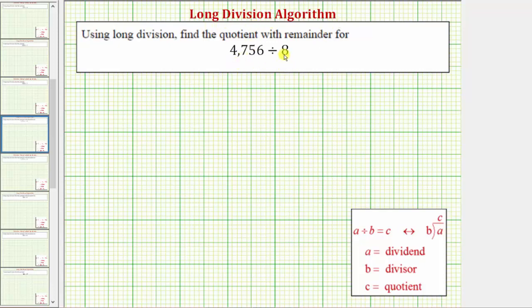The first step is to write the division problem in long division form, which is this form here. We can write 4,756 divided by 8 as 4,756 divided by 8 in this form here.